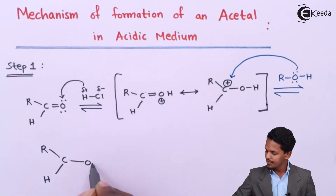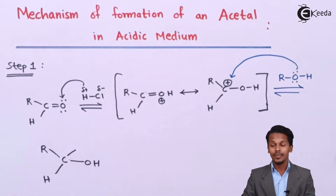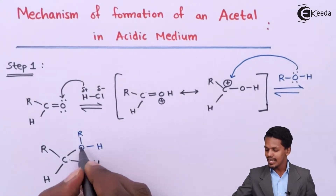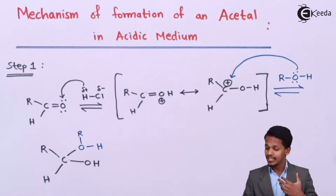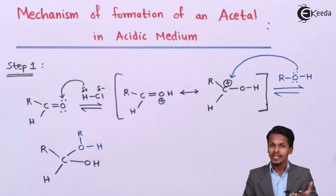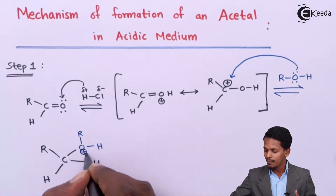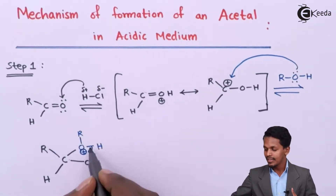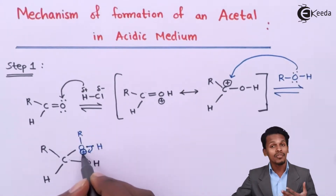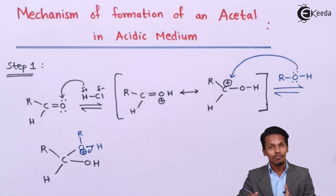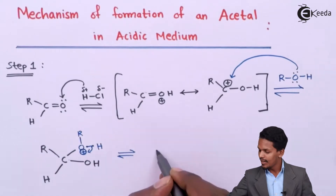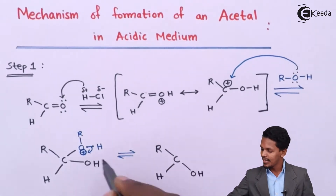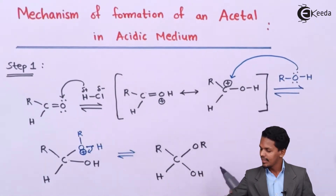The product is RCH with an OH group and an OR group (shown in blue ink). The oxygen here is forming three bonds, so it acquires a positive charge and is unstable. The electron pair between oxygen and hydrogen is transferred and the H⁺ ion is removed, giving the product RCH(OH)(OR) along with H⁺.